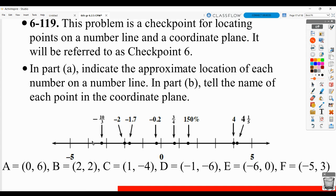And then for part B, tell the name of each point on the coordinate plane. So you can see what they have here, and then you can see what we have here. So on the number line, and then the ordered pairs.